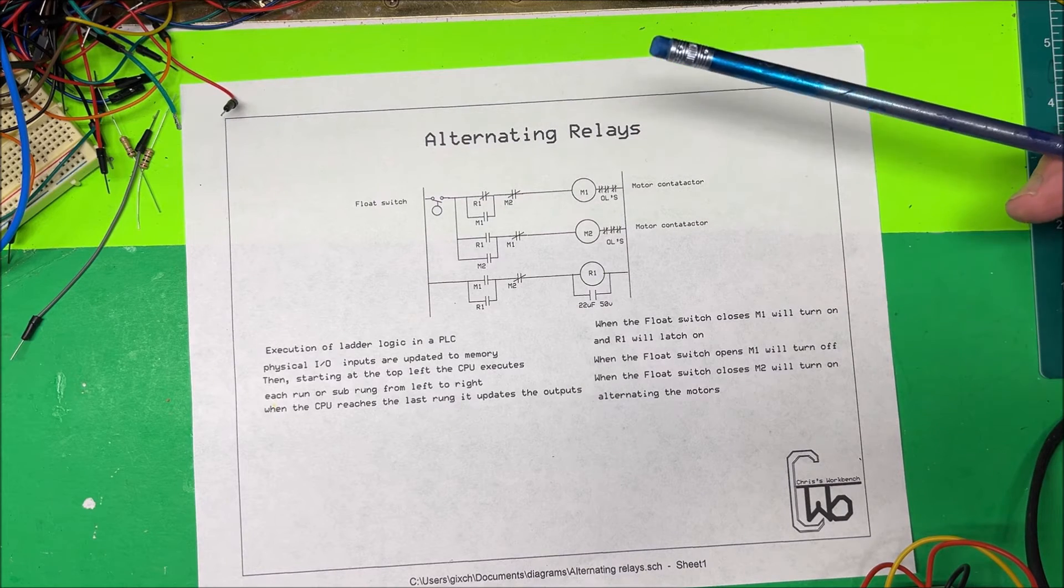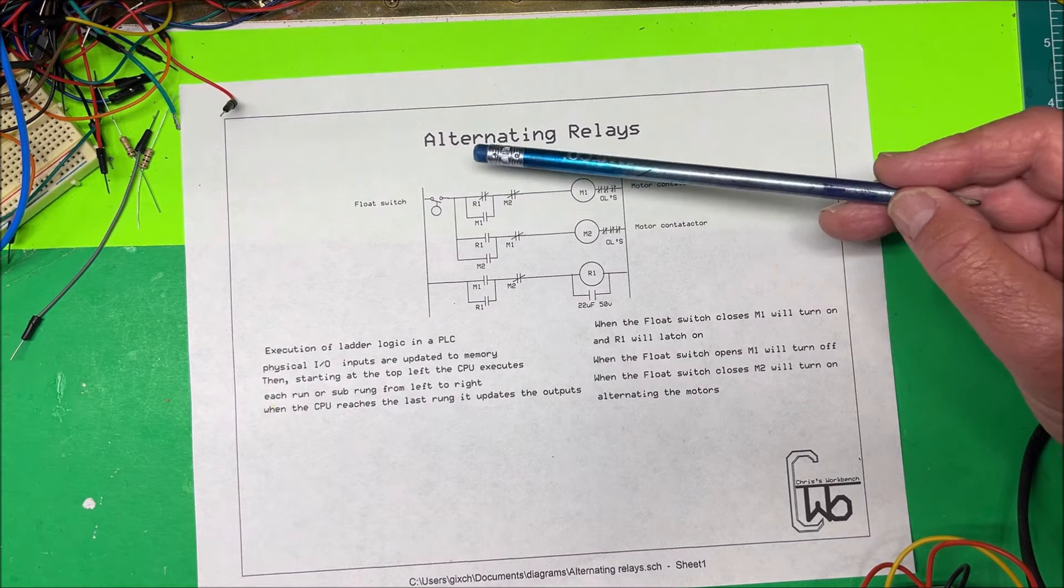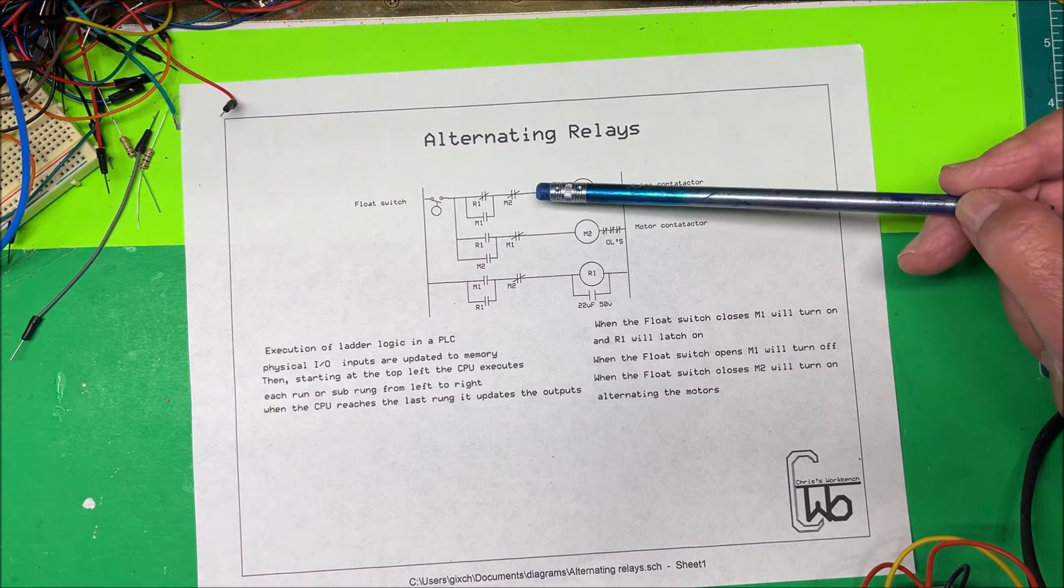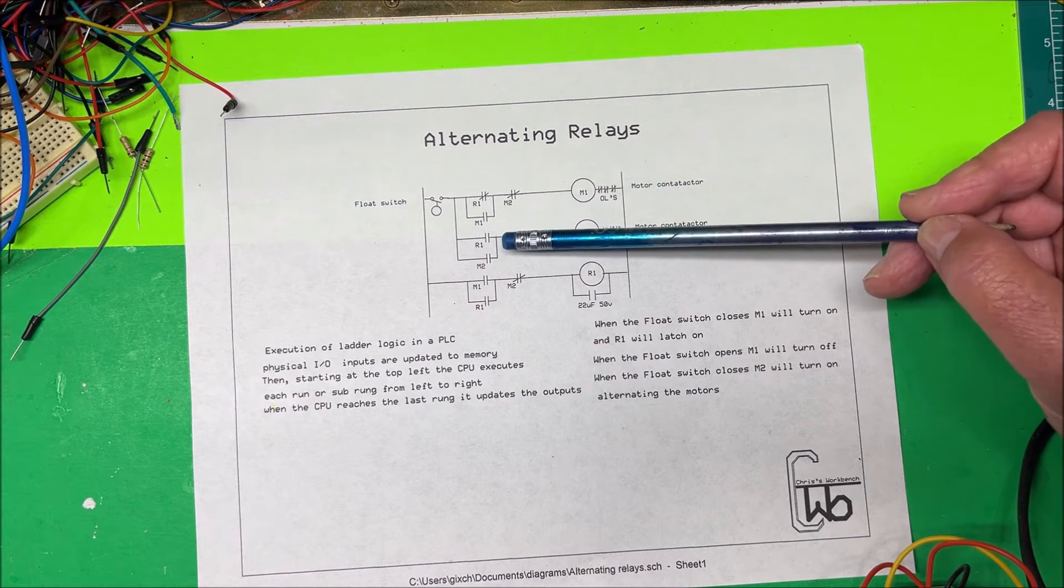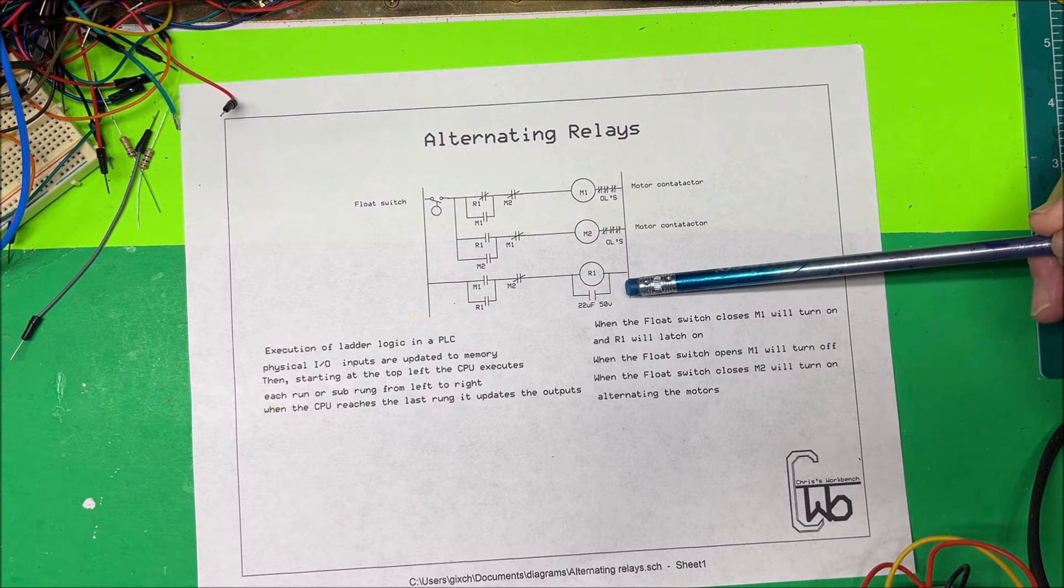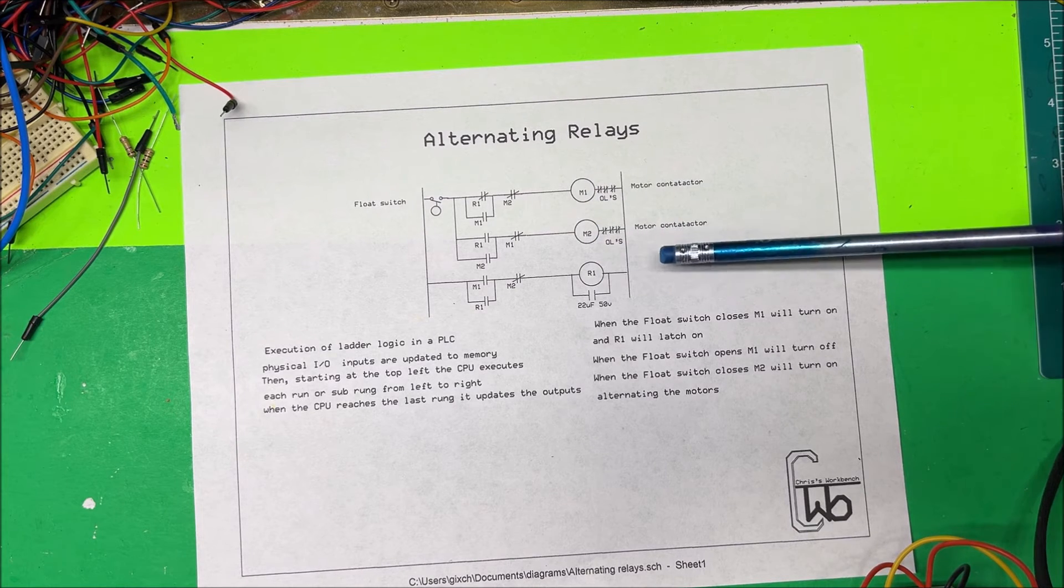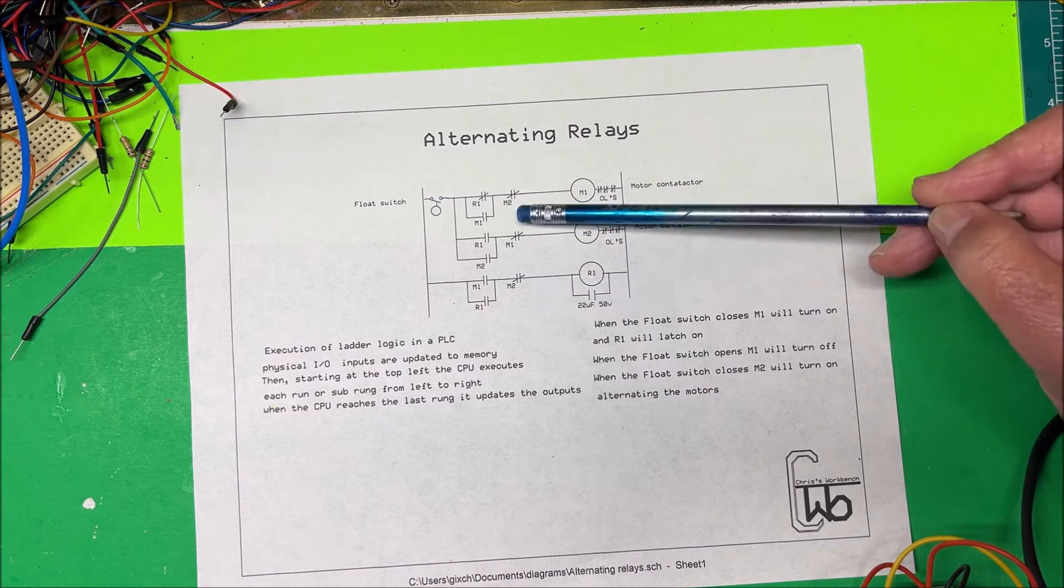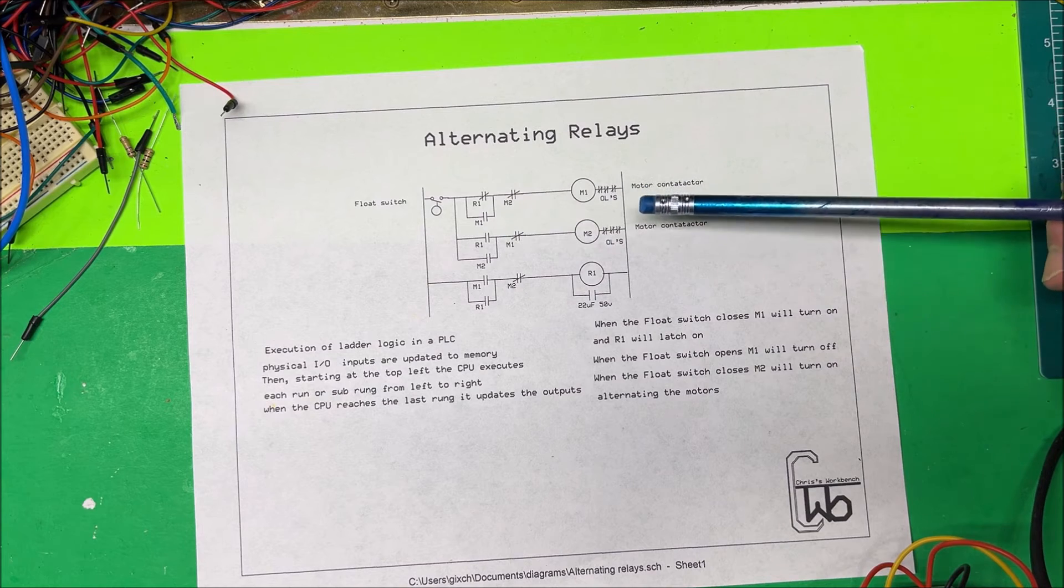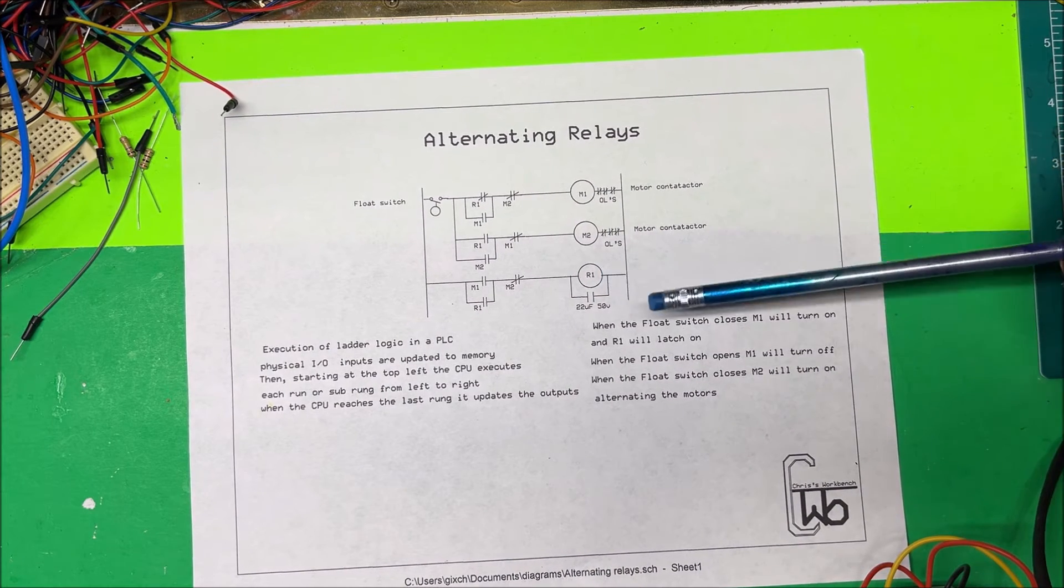Starting from the top left, the CPU executes these rungs this way - each rung and sub-rungs all the way to the bottom. When it gets to the last one, it updates all the outputs. You don't have any problem with make before break on that. In a PLC it's going to work just fine, but if you're doing relays, you might need to slow this one down a little bit to have make before break.